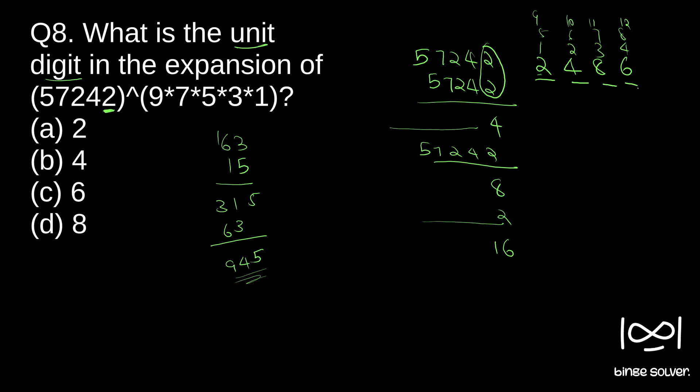To find which position in the cycle this falls on, we divide 945 by 4 and see the remainder. If the remainder is 1, the unit place is 2; if remainder is 2, it is 4; if remainder is 3, it is 8; and if remainder is 0 (or 4), it is 6. The closest multiple of 4 to 945 is 944, so 945 divided by 4 gives remainder 1. Therefore the unit place will be 2.